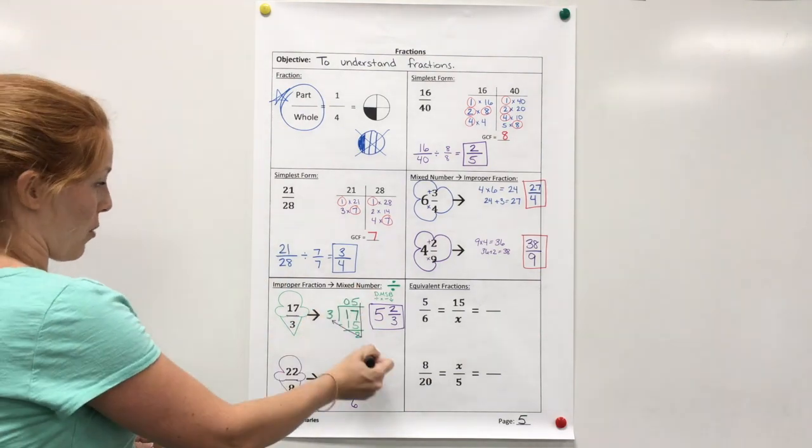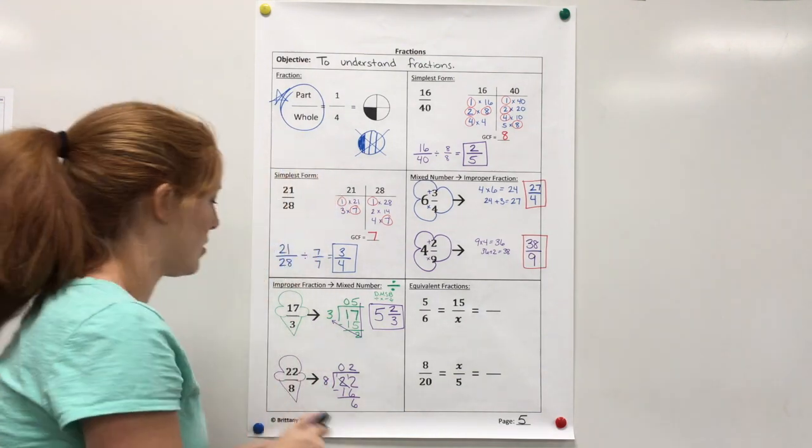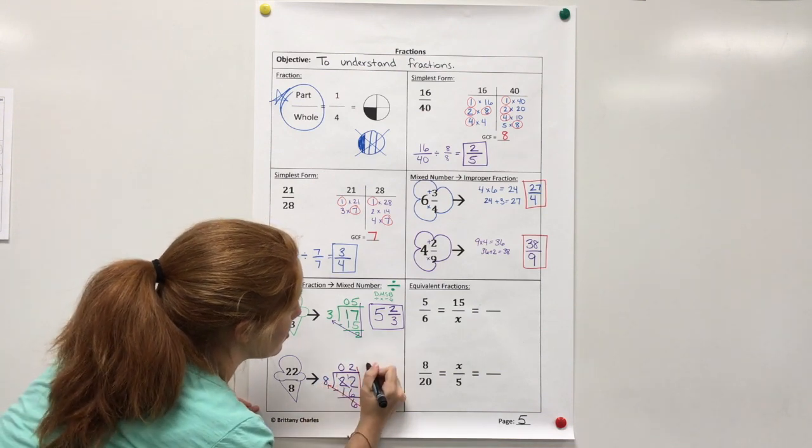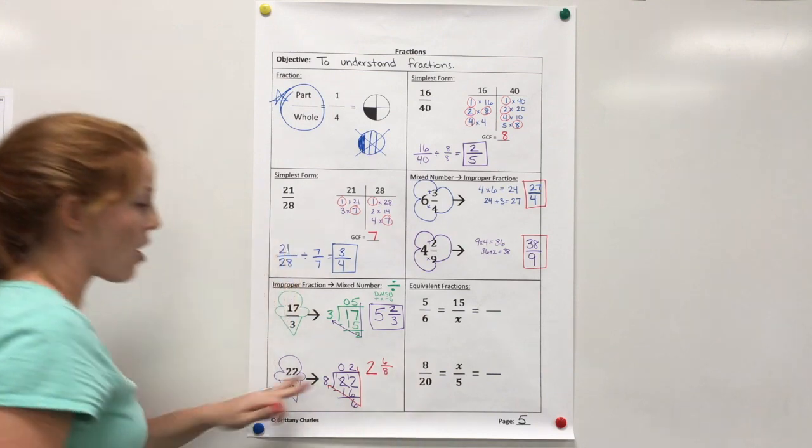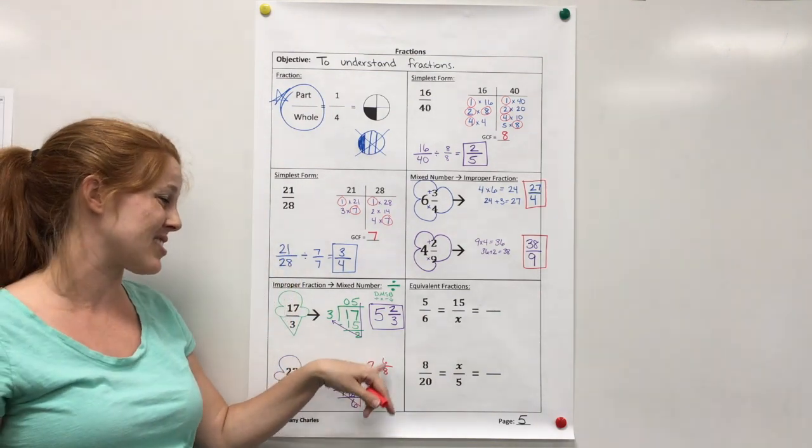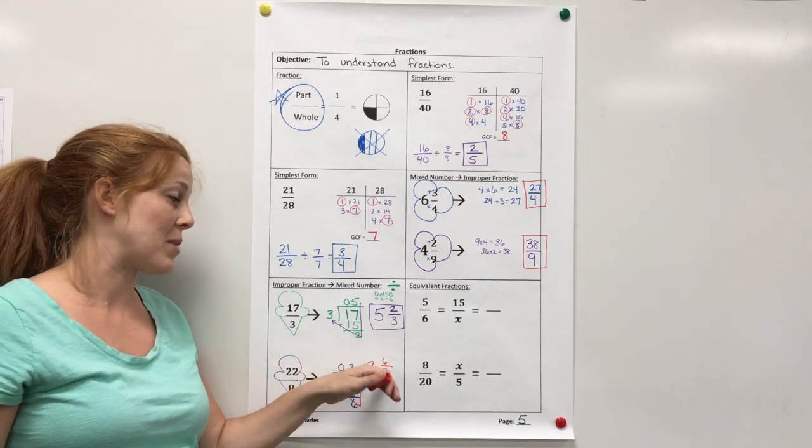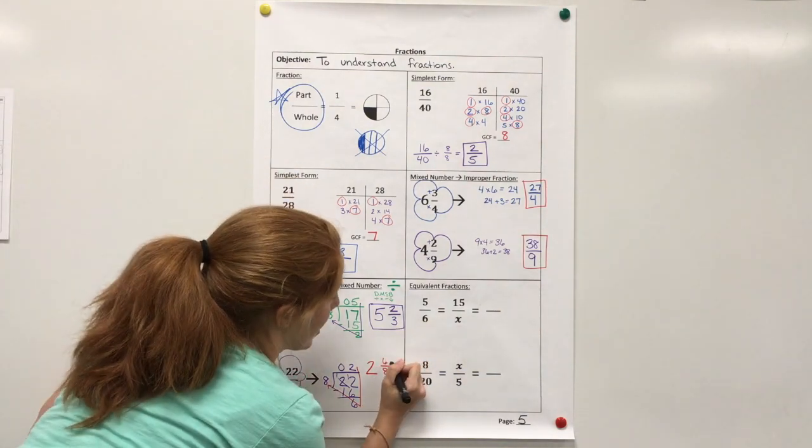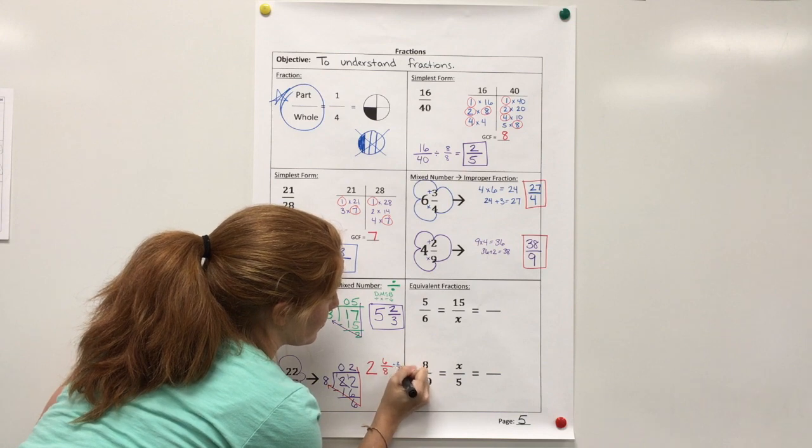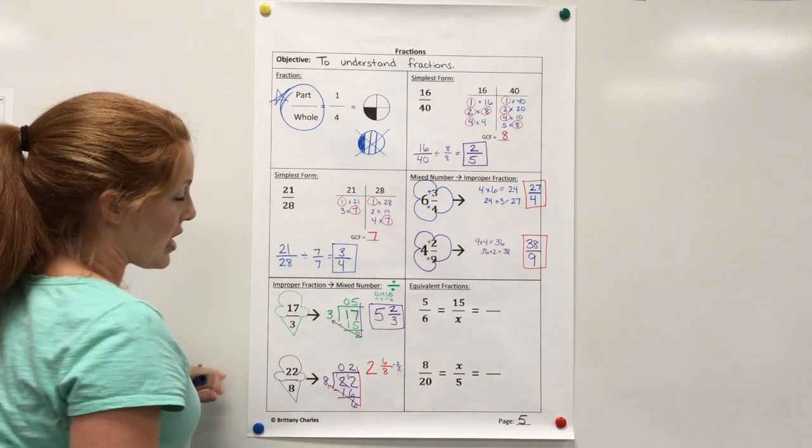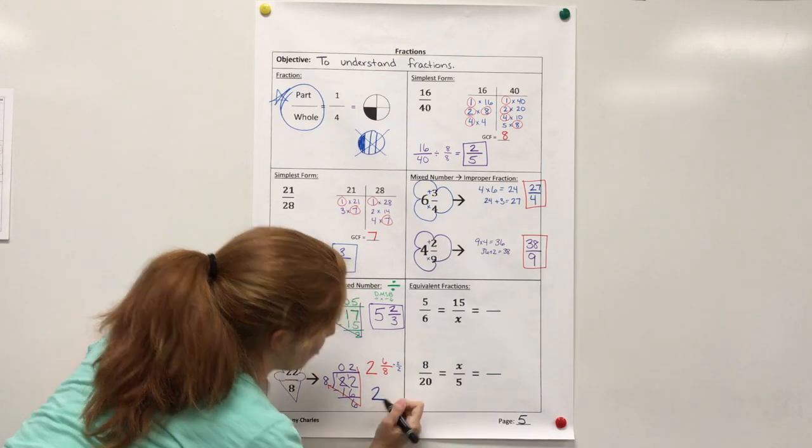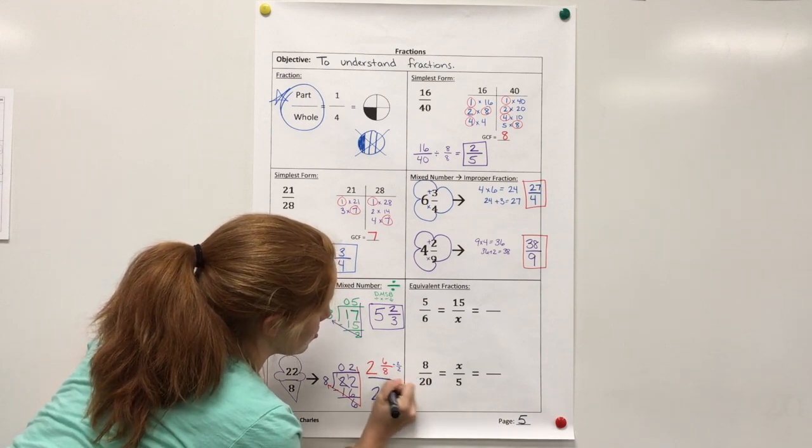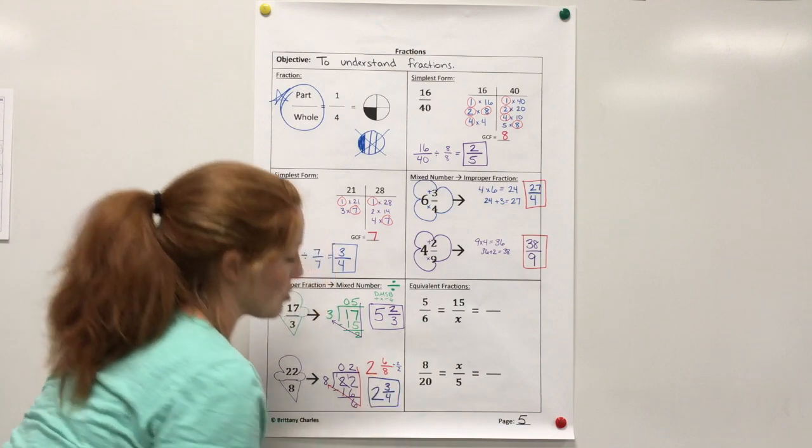All right, now, I'm going to do my little backwards V. So 2 and 6 eighths. 2 and 6 eighths. Now, I'm actually not done, because I noticed that 6 and 8 are both even. So I know I can divide by 2, and I can reduce that fraction. So I'm going to go ahead and reduce. I would just divide by 2 over 2, because 2 is the greatest common factor here. And that would give me an answer of 2. My whole number doesn't change. But 6 divided by 2 is 3. 8 divided by 2 is 4. So, simplest form, my answer is 2 and 3 fourths.